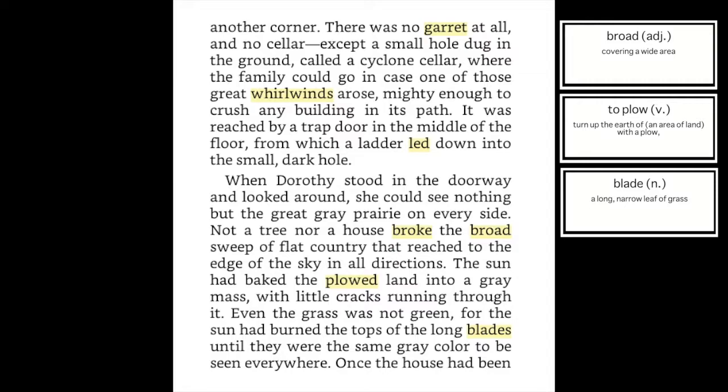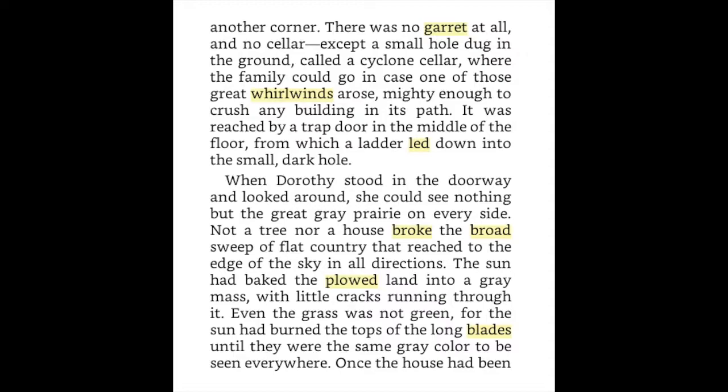When Dorothy stood in the doorway and looked around, she could see nothing but the great gray prairie on every side. Not a tree nor a house broke the broad sweep of flat country that reached to the edge of the sky in all directions. The sun had baked the plowed land into a gray mass with little cracks running through it. Even the grass was not green, for the sun had burned the tops of the long blades until they were the same gray color to be seen everywhere.